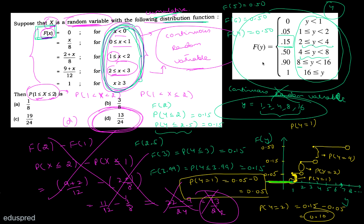Main point यह है: क्योंकि cumulative distribution function में intervals लिखे हैं, इसका मतलब यह नहीं है कि variable continuous है। CDF में हमेशा ही intervals मिलेंगे — चाहे discrete हो या continuous। तुम्हें function को logically analyze करना पड़ेगा यह देखने के लिए कि random variable actually में discrete है या continuous।